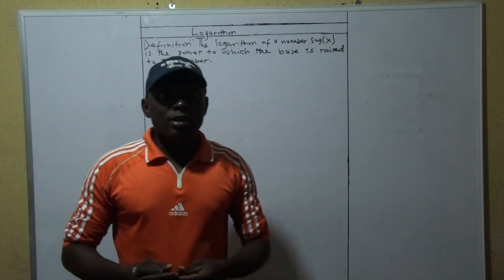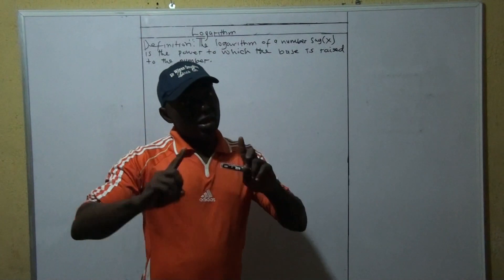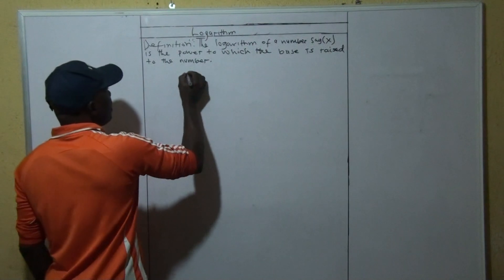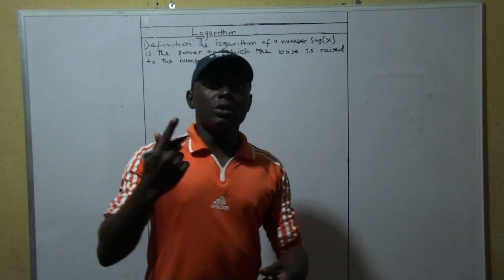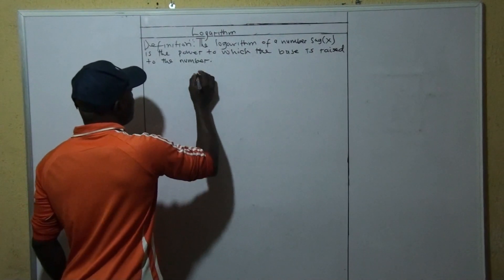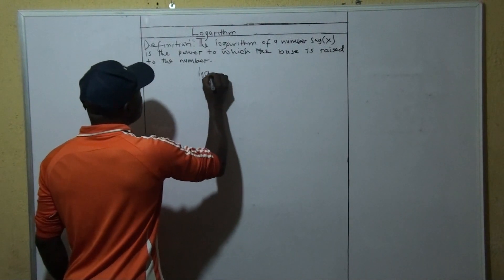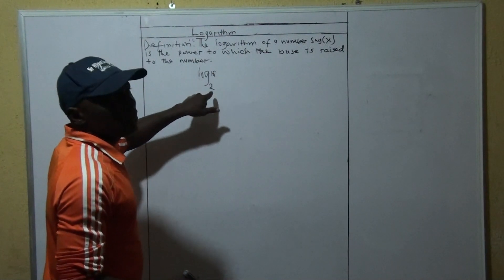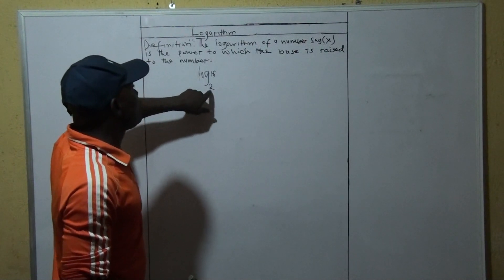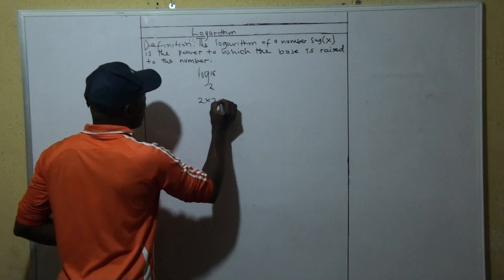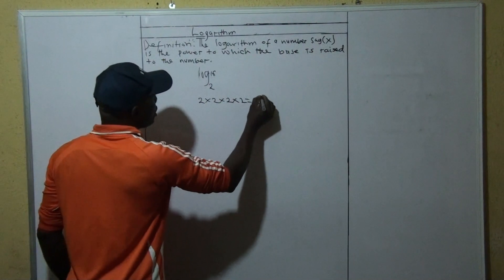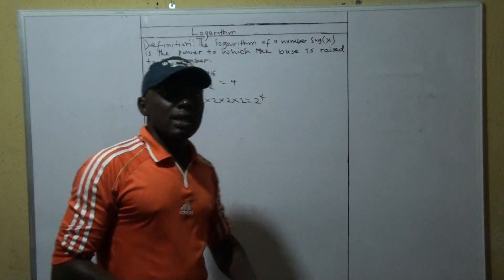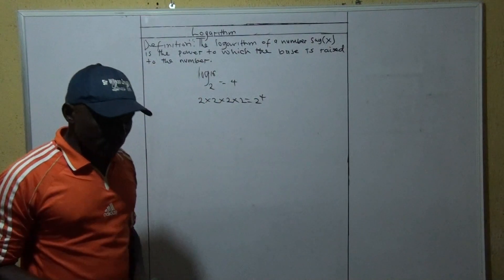Another word for logarithm is 'power' or 'exponent.' The most important thing to know here is that indices and logarithm work hand in hand. For example, log of 16 to base 2: how many times do we raise 2 to get 16? That is 2 raised to the power 4. So log of 16 to base 2 equals 4. That is the simple definition of logarithm.